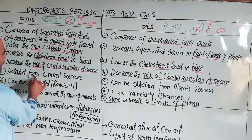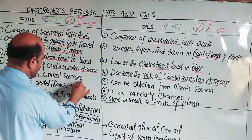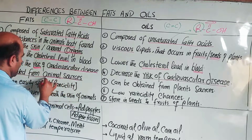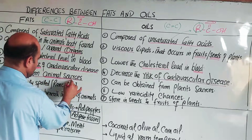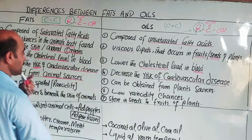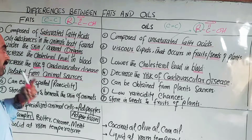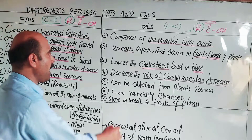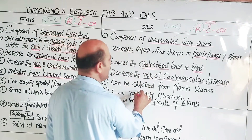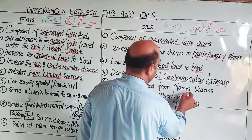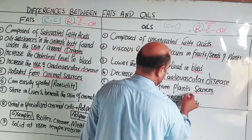Another difference is that fats are isolated from animal sources — they are obtained from animal bodies — while oils are obtained from plant sources.